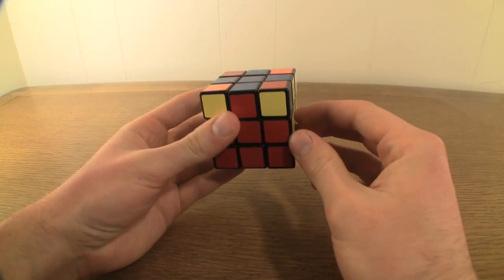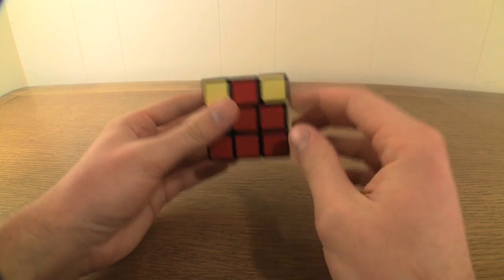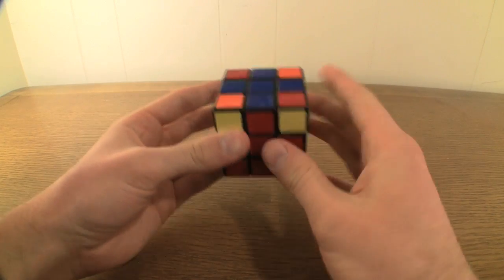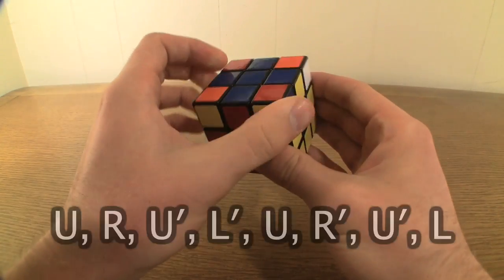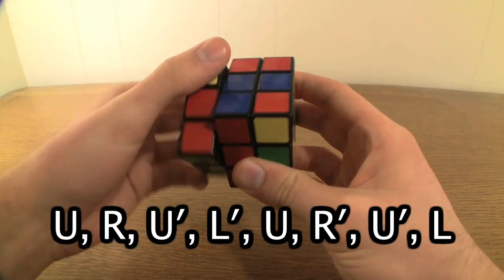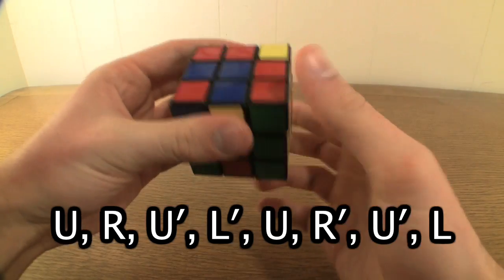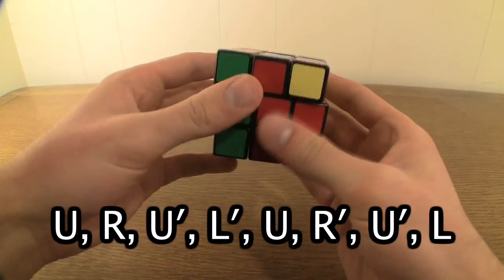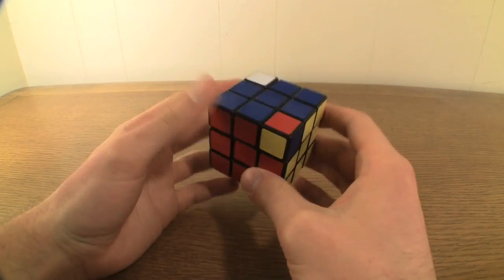Hold the cube so that the corner piece that is in the correct location is in the upper right of your front face and perform the algorithm U, R, U', L', U, R', U', L'.